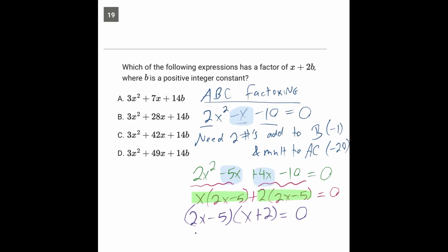So we'll take out the 2x minus 5, and it leaves us with x plus 2. Now we can use our zero product rule and say this equals 0, and this equals 0, and we'll get our two actual answers, 5 over 2 and negative 2. So that's a method you need to be good at if you want to top score on the SAT.